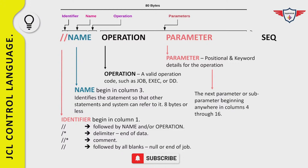The last field is the sequence number, which is actually optional and not used anymore. These were used in the 1960s for punch cards.